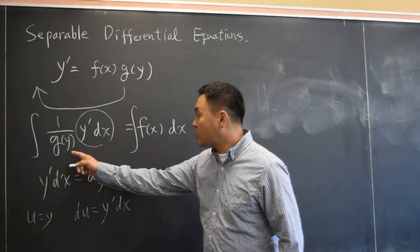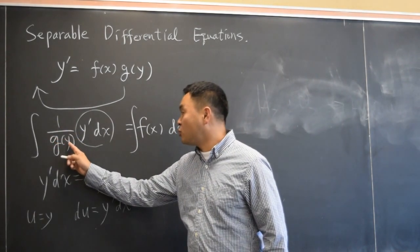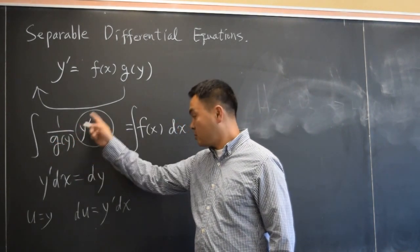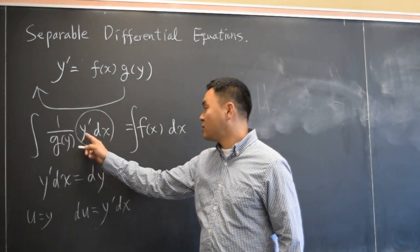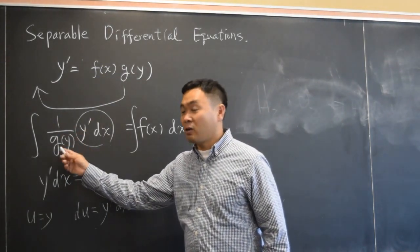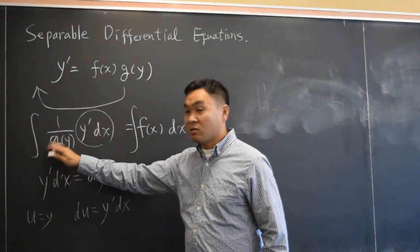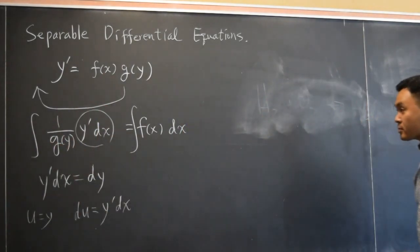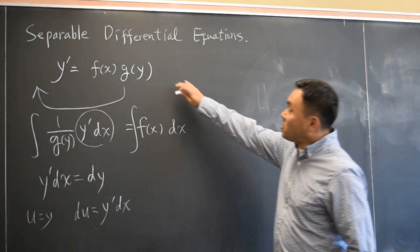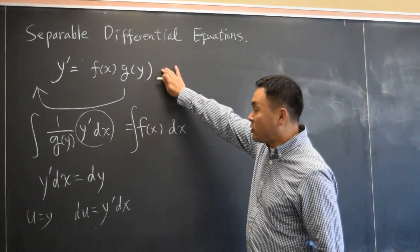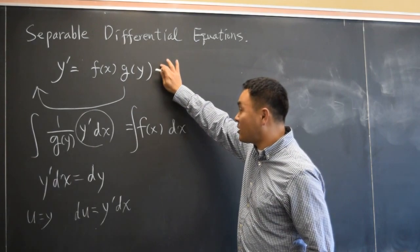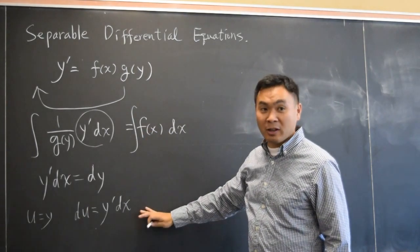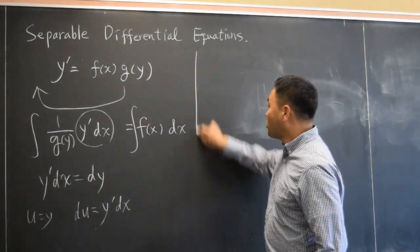So you can either think of it as 1 over g of u du, or you can just say it's 1 over g of y dy. So that way you can integrate because this is a function of y. So this is what we call separable differential equations. And if you happen to have a differential equation that looks like this, then you can apply this strategy to solve. Let me show you an example.